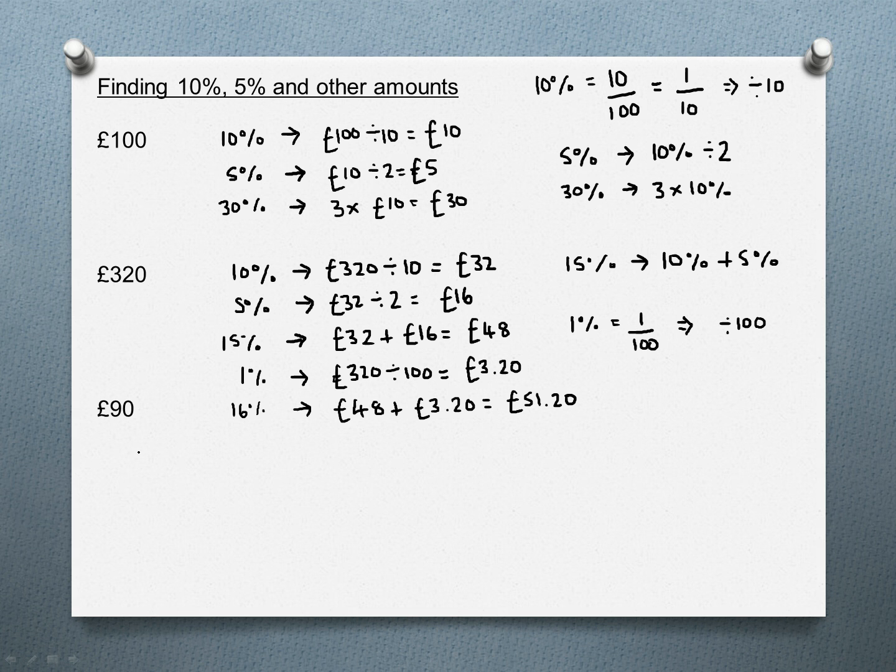Looking at 90 pounds, 10% is divide by 10 to give us 9 pounds. 5% is half of 9 pounds, 4 pounds 50. We could get 20% by doubling that, so 10% times 2, that's 18 pounds. We could get 1% by dividing 90 pounds by 100. Remember 1% means divide by 100, so that would be 90p. From 1%, we could get 2%: 2% is just 2 lots of 1%, so 2 lots of 90p, which is £1.80.